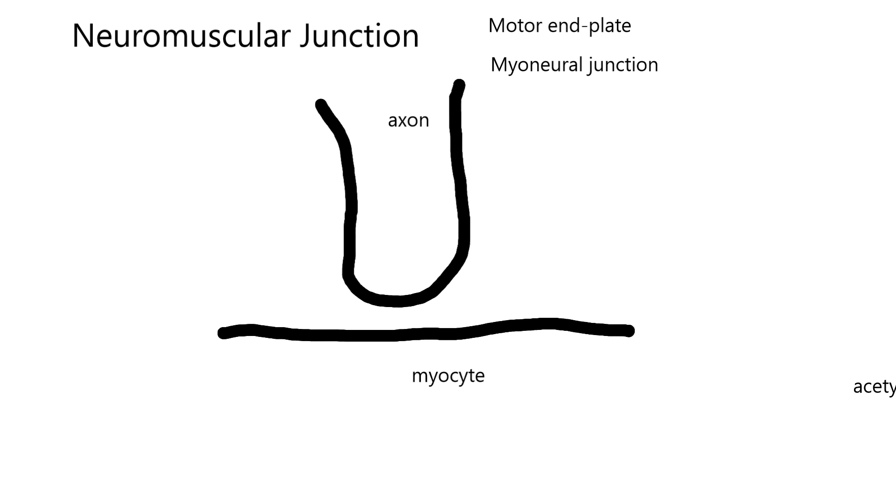And we know that we can put the neurotransmitters that are released from the presynaptic membrane, and they will diffuse to the postsynaptic membrane. And the name of that neurotransmitter is acetylcholine. This is your classical neuromuscular junction.